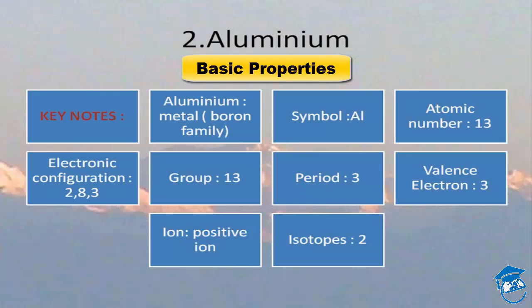Let's understand some basics of aluminium. Aluminium is a metal; it belongs to the boron family, which is the 13th group, period 3, with the symbol Al and atomic number 13, which means it has 13 protons and 13 electrons. Accordingly, the electronic configuration of aluminium is 2, 8, 3, which means the valence electrons of aluminium is 3 — the outermost shell has three electrons. When aluminium takes part in a chemical reaction, it gives a positive ion: a 3+ positive ion.